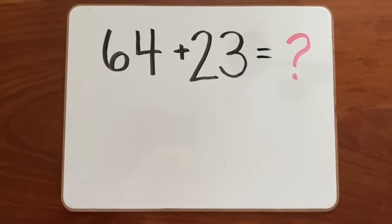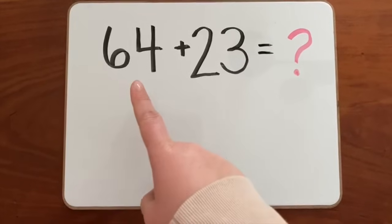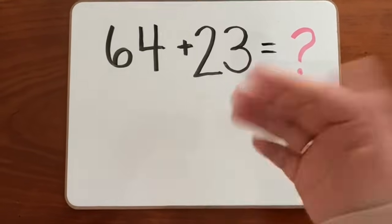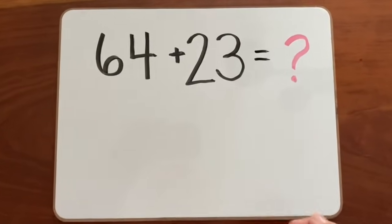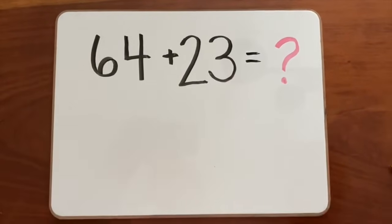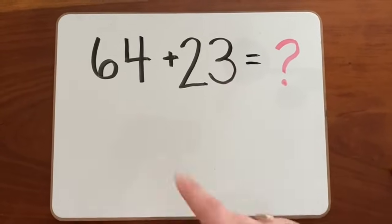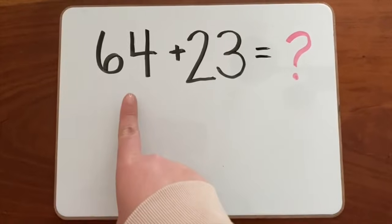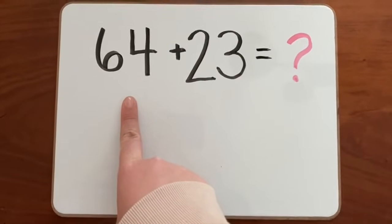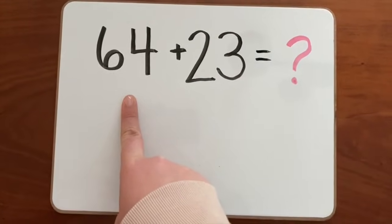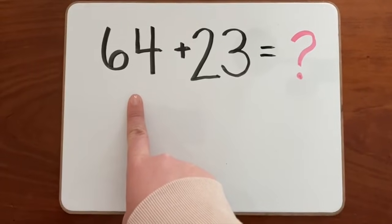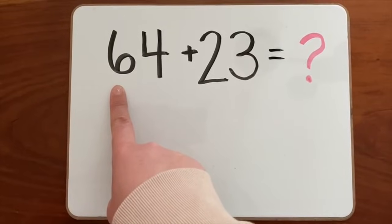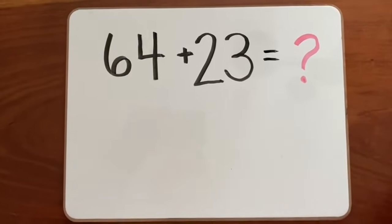Let's try another. This number sentence says 64 plus 23 equals, let's use our longs and cubes to find out. Just like last time, we'll start off by making both of these numbers in our longs and cubes. For the number 64, which number is in the tens place? The number six is in the tens place, so we will need six longs.